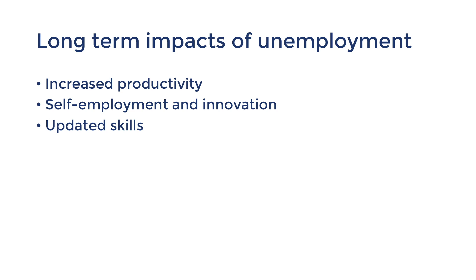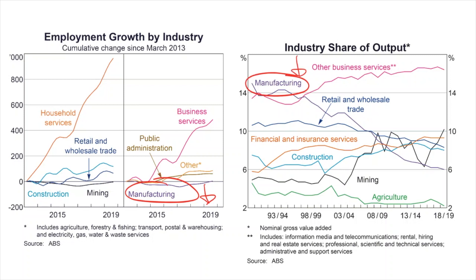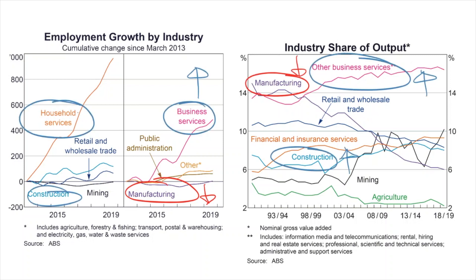Last but not least, unemployment leads to allocative efficiency. The first workers to be unemployed are usually from industries that are declining due to falling consumer demand or are relatively unproductive. In the long term, these workers will eventually be re-employed in more efficient industries — this shift from inefficient industries to efficient ones is allocative efficiency. An example is when unemployment from the declining manufacturing industry was eventually resolved by an increase in employment growth in construction and service industries where there was consumer demand.